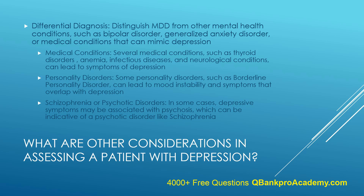In some cases, depressive symptoms may be associated with psychosis, which can be indicative of a psychotic disorder like schizophrenia. Symptoms of PTSD can include intrusive thoughts, avoidance, emotional numbing, and mood disturbances that may overlap with depression, and a careful assessment can differentiate between the two. Premenstrual dysphoric disorder (PMDD) is characterized by severe mood and physical symptoms that occur in the premenstrual phase of the menstrual cycle. Somatic symptom disorders can lead to the misinterpretation of physical symptoms, resulting in feelings of hopelessness and depression. Certain medical conditions such as stroke or brain injury can directly affect mood and may be misdiagnosed as depression.